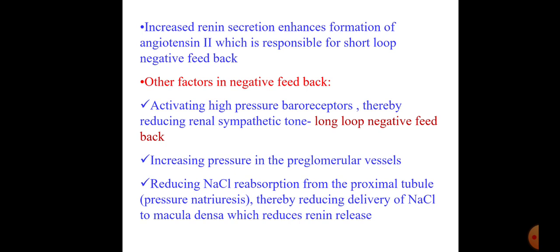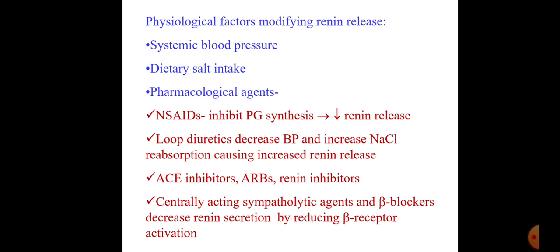Increased renin secretion enhances formation of angiotensin 2, the ultimate molecule regulating all activities of the RAS pathway. Angiotensin 2 is responsible for the short-loop negative feedback, and other negative feedback mechanisms include activation of high-pressure baroreceptors reducing renal sympathetic tone — the long-loop negative feedback. There is also increased pressure in the pre-glomerular vessel and reduction of sodium chloride reabsorption from the proximal tubule — pressure natriuresis — thereby reducing delivery of sodium chloride to the macula densa, which reduces renin release.